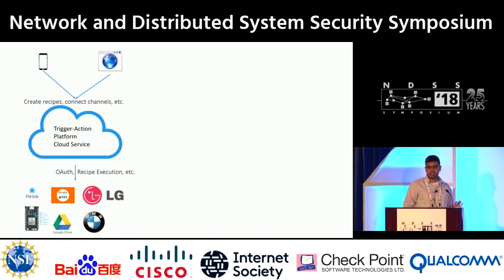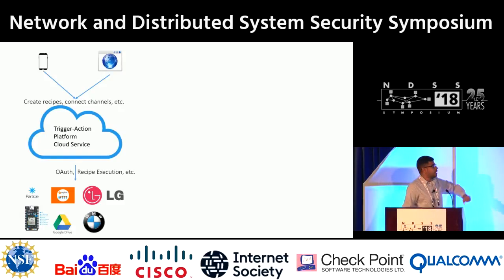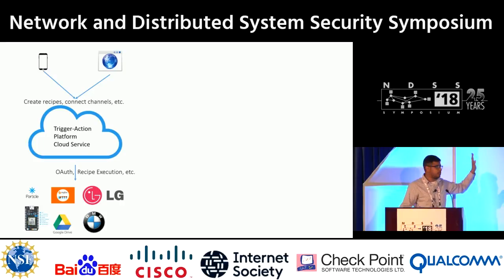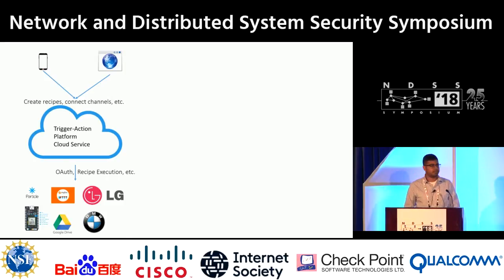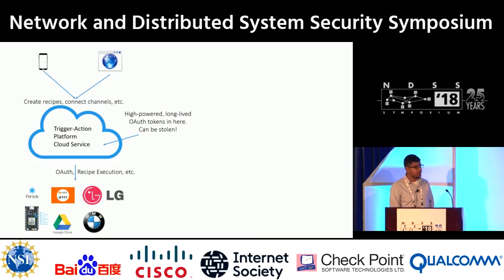Let me show a quick before-and-after picture to give a high-level sense of what's going on. This is the trigger action platform design today: you have this cloud service, users use a client, they connect their channels, they program recipes, and then the service uses OAuth tokens to execute these recipes with the devices. A lot of these high-powered bearer tokens live in that centralized system.